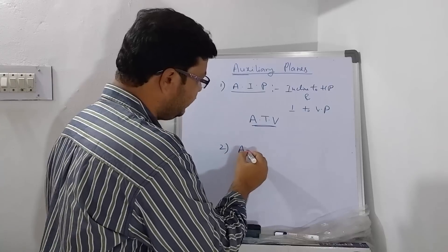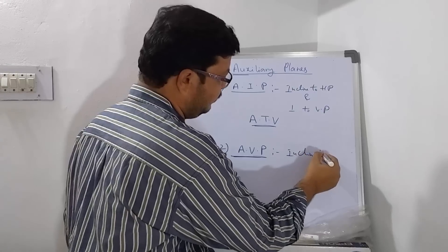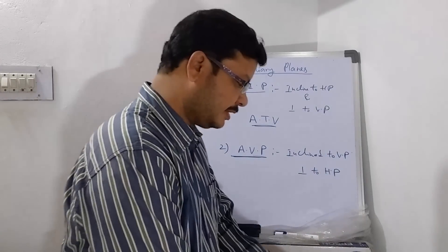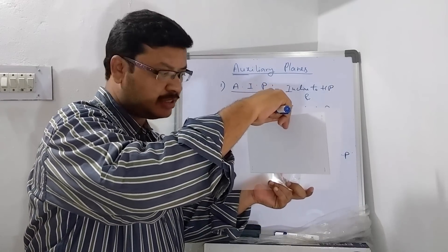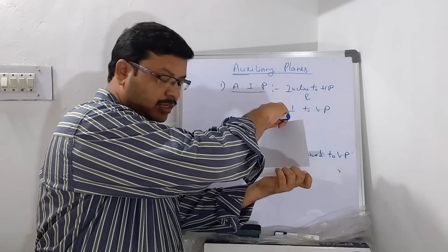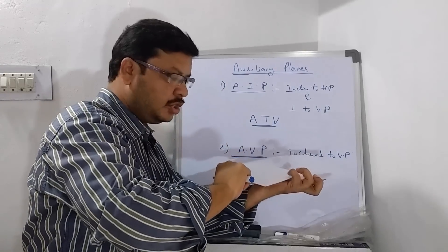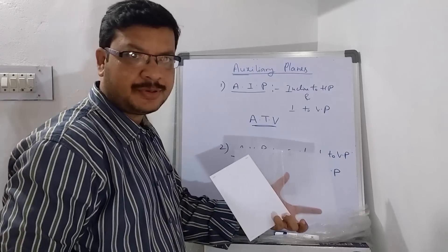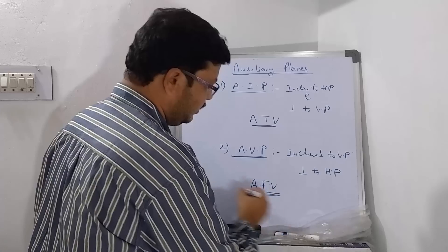The second auxiliary plane is the auxiliary vertical plane, which we call AVP. This is inclined to VP and perpendicular to HP. If you assume this is VP, then this plane will make some angle with respect to VP. It is perpendicular to HP. Because it maintains some angle with respect to VP, you have to tilt it with respect to HP to get the view on the same plane. After that you can tilt HP and this plane to represent it on paper. The view obtained on this plane is called the auxiliary front view.